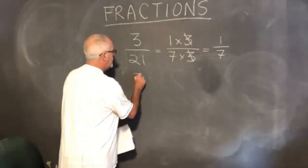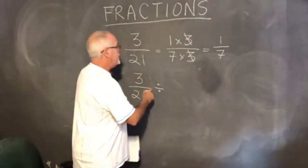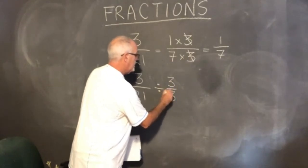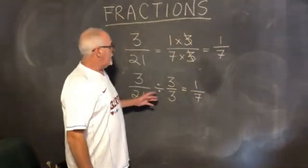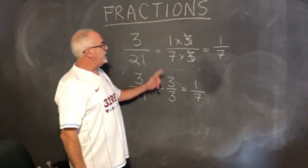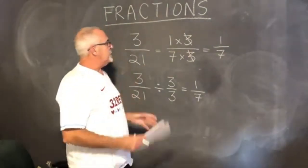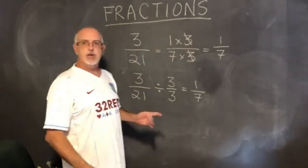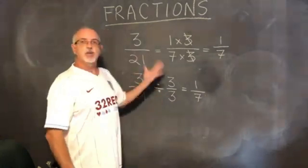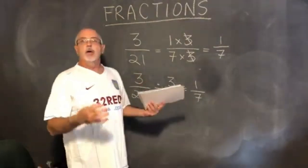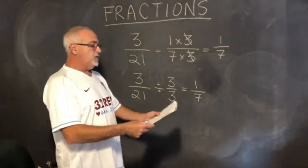Another way I usually show it: write 3 over 21 and divide by a clever form of 1. In this case, divide by 3 over 3. 3 divided by 3 equals 1, and 21 divided by 3 equals 7 — same answer. I'm doing the same thing, just showing it as division by a clever form of 1 here, and showing it as multiplications with canceling there. Canceling is one of the most fun things to do with fractions.